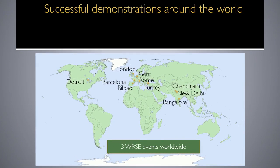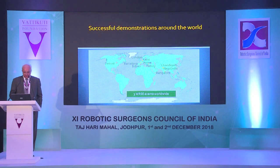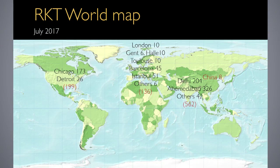Another part of the IDEAL development framework is spreading the procedure. We visited centers around the world and demonstrated live how this procedure could be done in different settings. There were three world robotic surgery events where it was projected live, and the rest were done at centers worldwide. As a result, people picked up the procedure at their own institutions. As of today, more than 1,200 cases have been documented, though many additional cases have likely not been captured in registries or published communications.